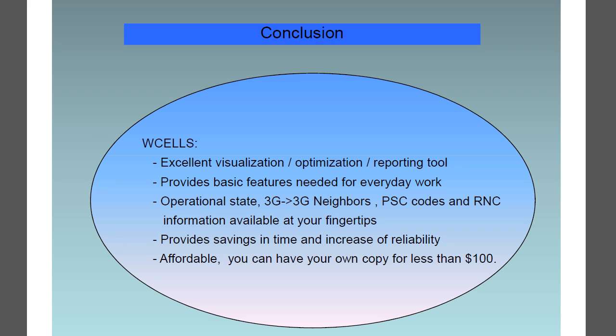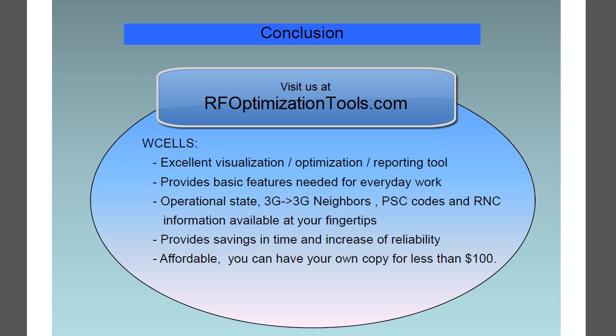With a price tag of under $100, WCELLS Lite UMTS is the best optimization tool in its category. Thank you for watching, and for more information and licensing of the WCELLS software, please visit us at rfoptimizationtools.com.